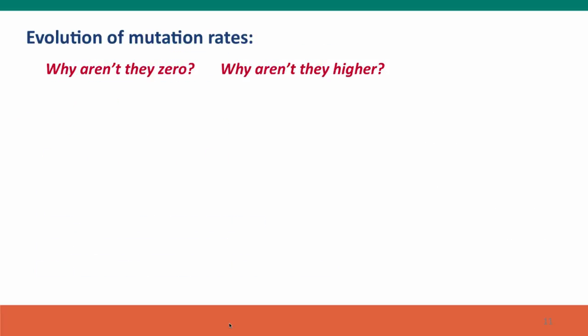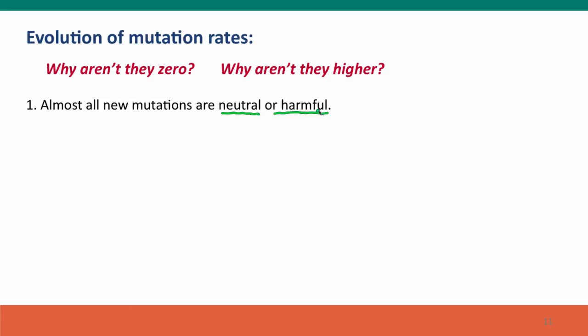Now I want to take a minute to think about the evolution of mutation rates. Why do we have the mutation rates that we have? We talked about mutation rates in an earlier lecture in this module. Why aren't mutation rates zero if most mutations are harmful? Why aren't they higher so we get more beneficial mutations? The factors we have to consider are, first, that almost all new mutations are neutral or harmful — new mutations are rarely beneficial.